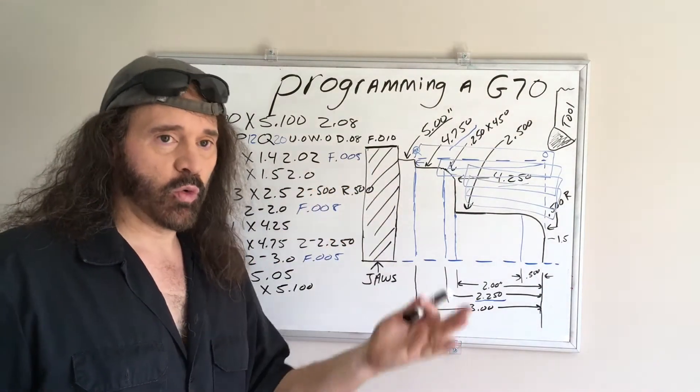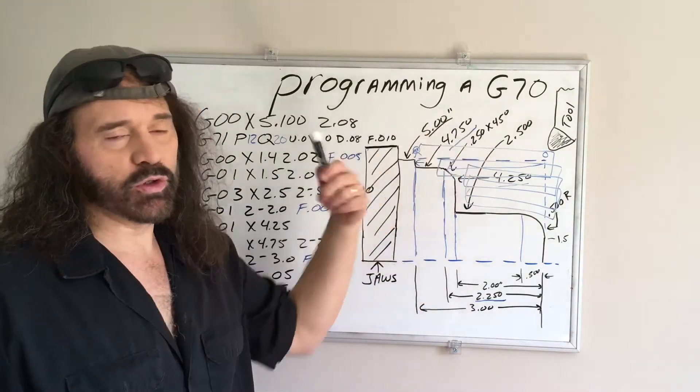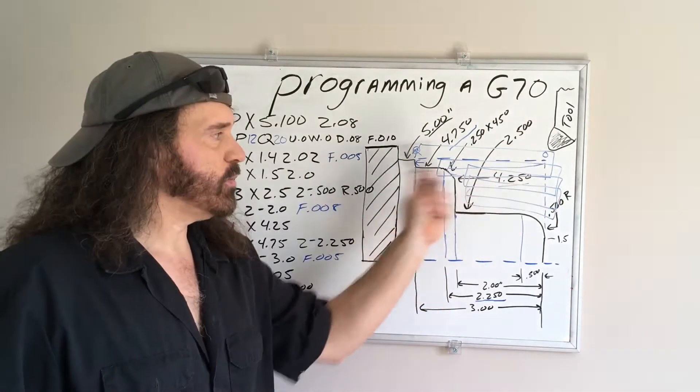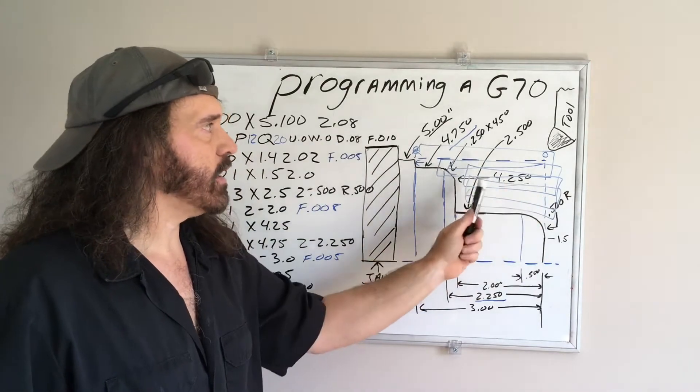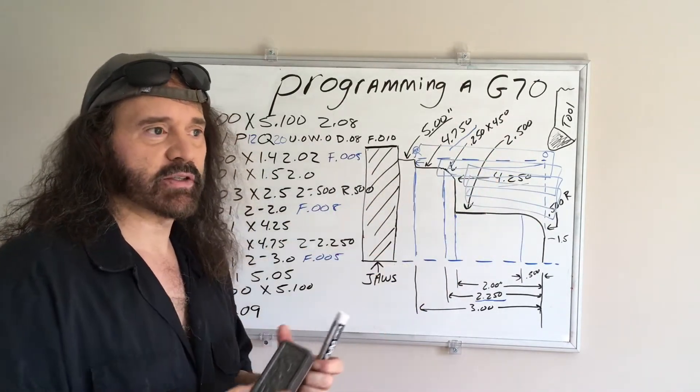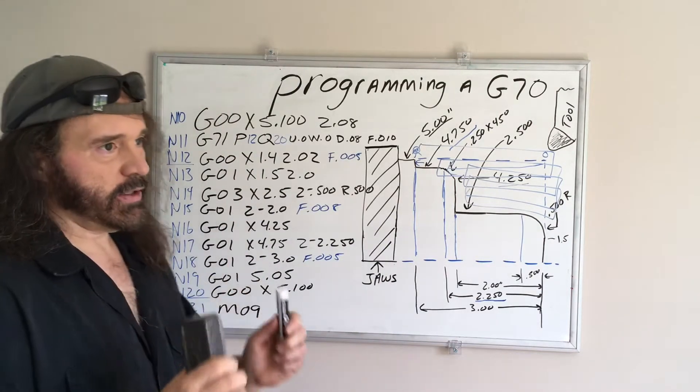When do you use a G70? Well, most of the time if you're using another tool to do a finish pass, that's usually when you use a G70. Use one tool to rough out the material and hammer away and get rid of all this stock, then use another tool to come in and do a nice finish pass.